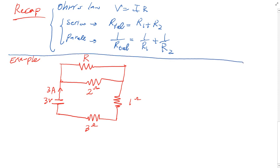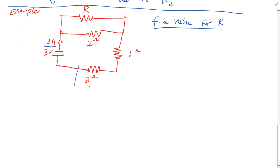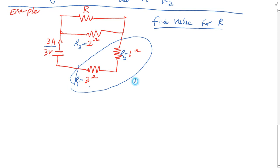Let's do a circuit problem. The question asks: given this circuit, find the value for R. I set up a circuit and did some measurements. I know the source is 3 volts, the current through the whole circuit is 3 amps, and I used resistors of 2 ohm, 1 ohm, and 3 ohm. I want to find the value for R. What I can do is replace two resistors — let's call them R1, R2, and R3.